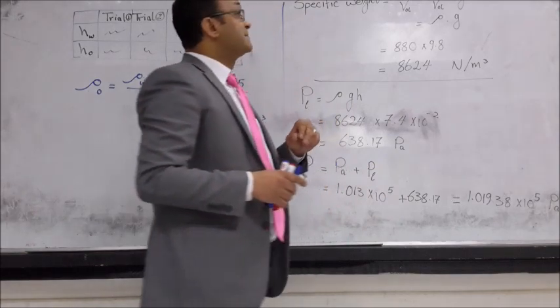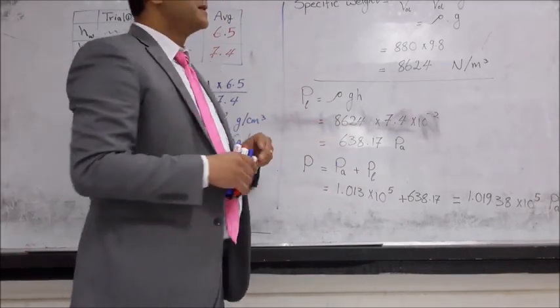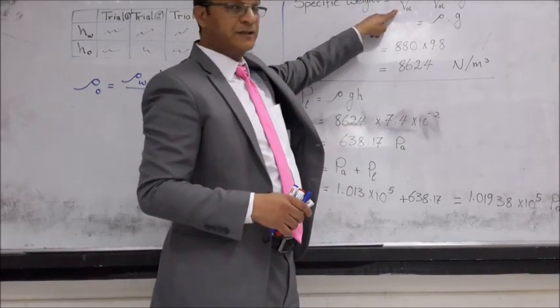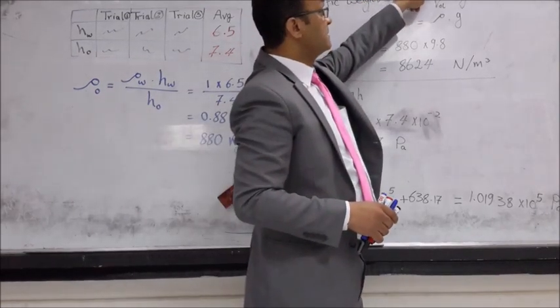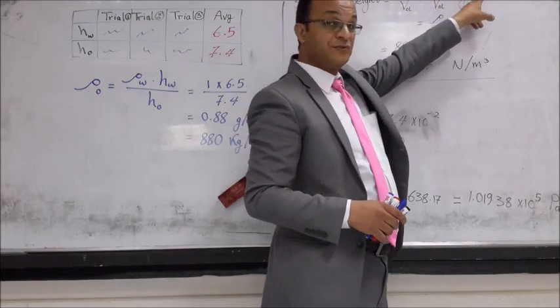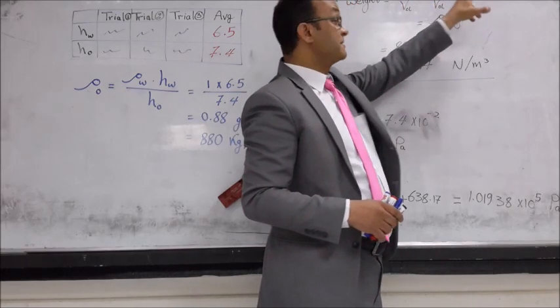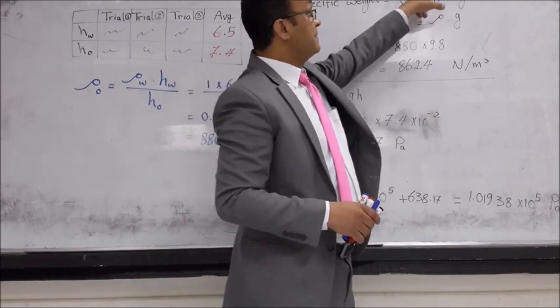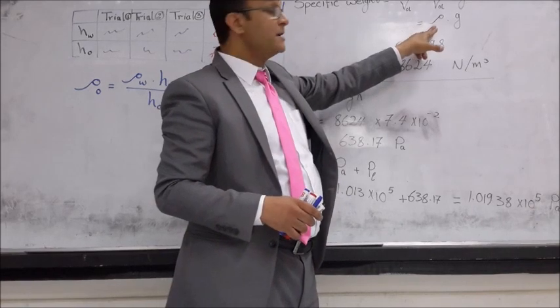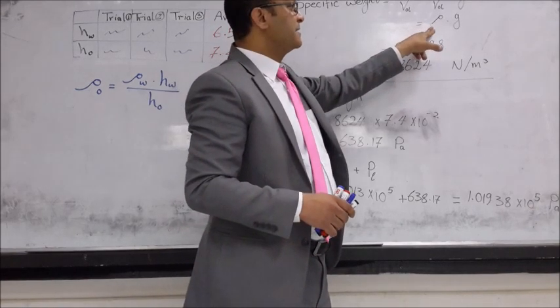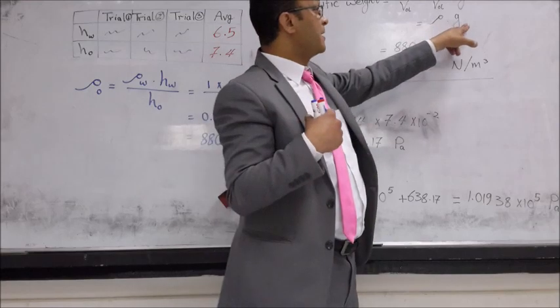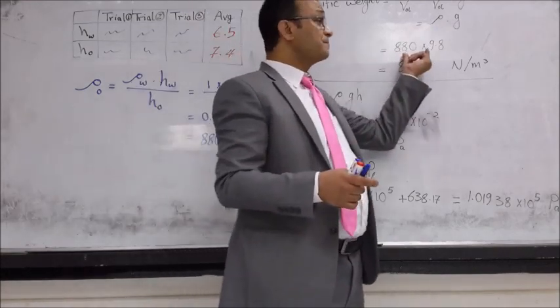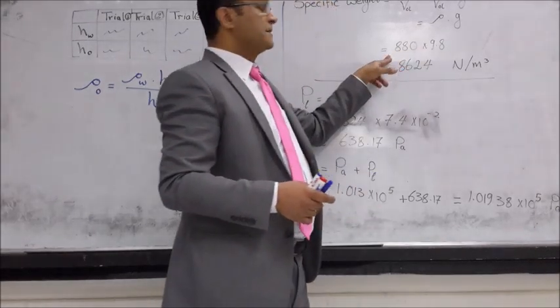Now we need to calculate the specific weight. Specific weight means the weight divided by volume. The unit reaches mass times gravity or acceleration due to gravity over the volume. As you can notice, mass over volume represents the density. So multiplying density, which is already determined by g, will find or will get us the specific weight. Here in this case,